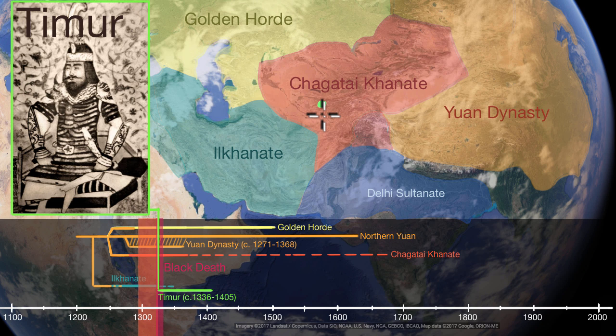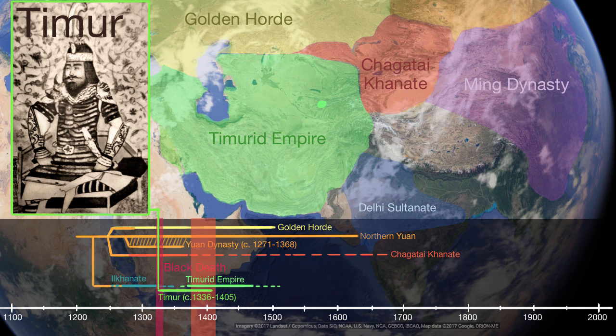Despite his physical impairments, he's able to conquer much of the Chagatai Khanate eventually, and the Ilkhanate, and establish a dynasty of his own. The empire gets established in 1370 when he gets effective power over much of the western Chagatai Khanate. He comes from a Turco-Mongol tradition. The Mongols conquered this large swath of territory with significant help from people speaking Turkic languages from Central Asia, Turkish being the most well-known.